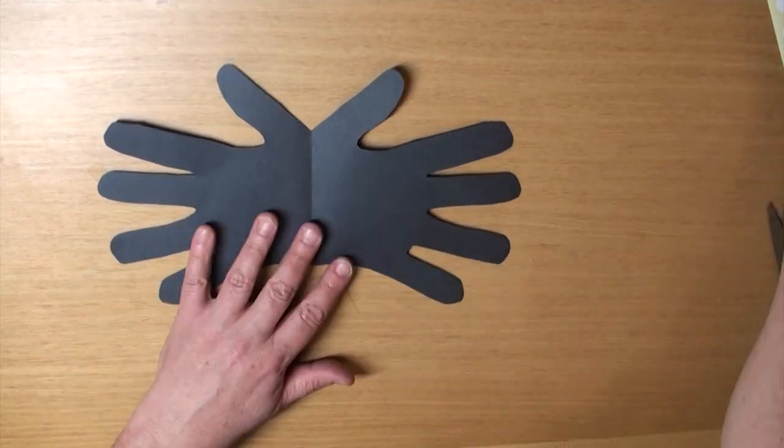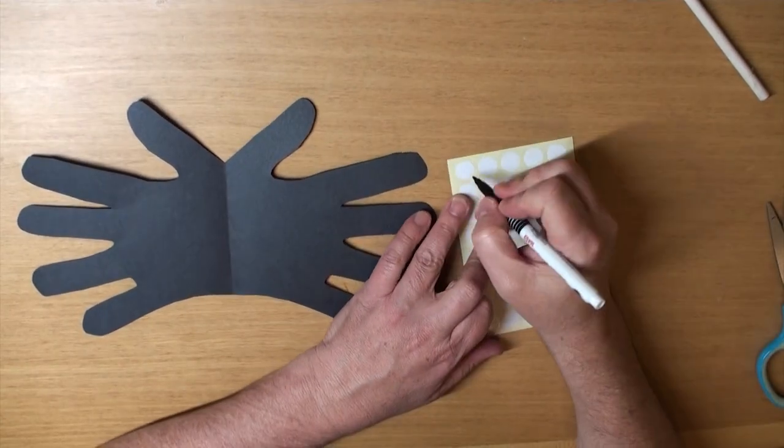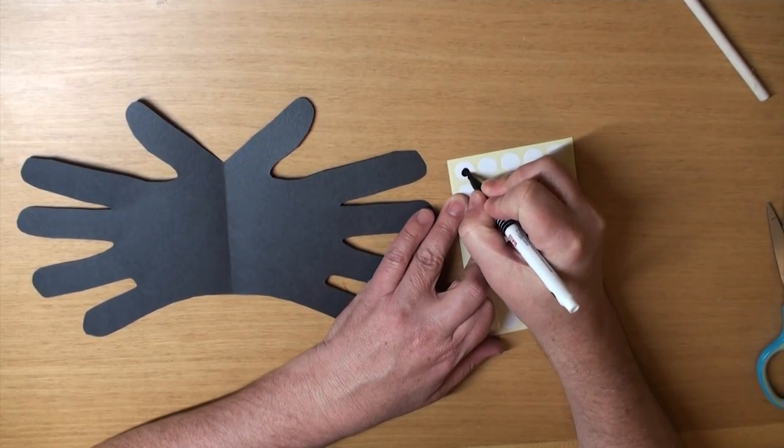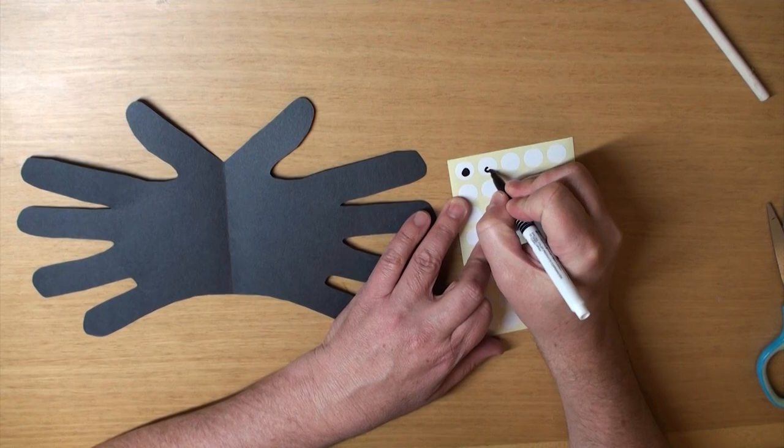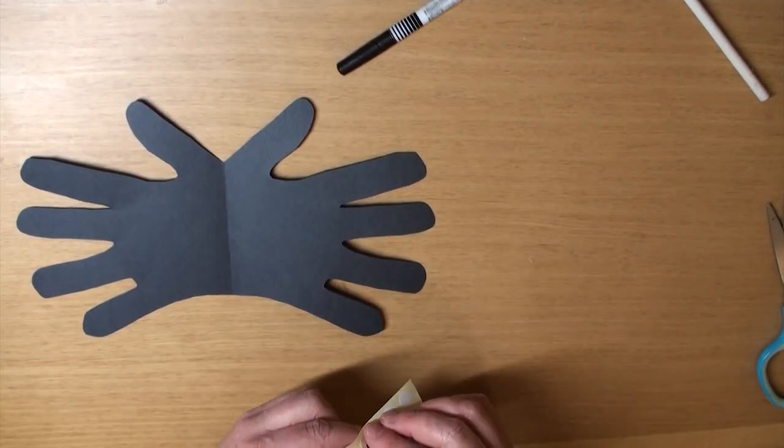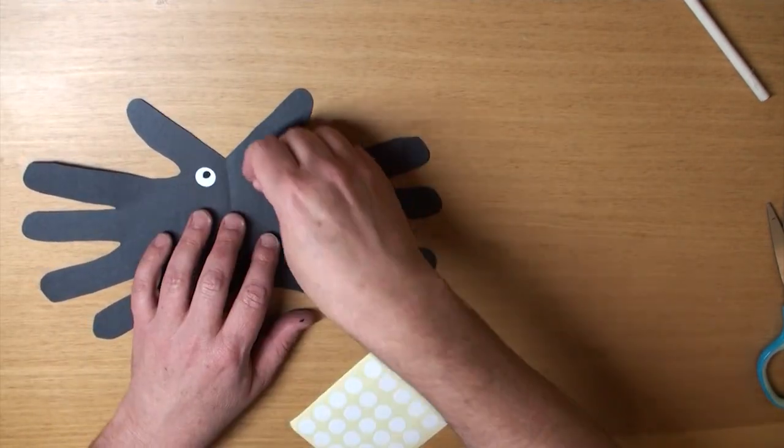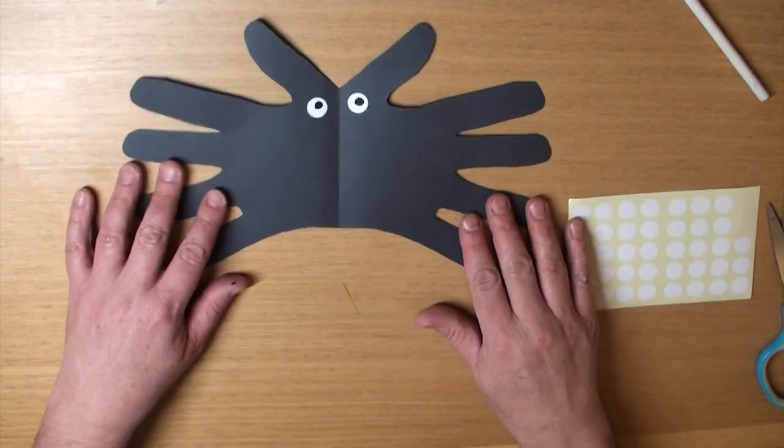Now here's our spider, and now we need to make the eyes. So grab your stickers, and let's draw on some eyes. There's one, and two. We're going to stick these on. You can make a mouth if you want too. It's up to you. Great!